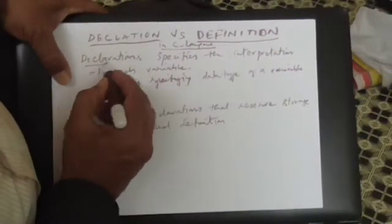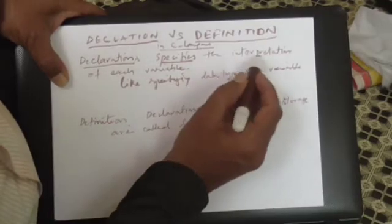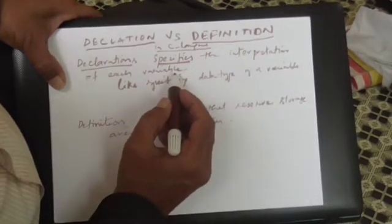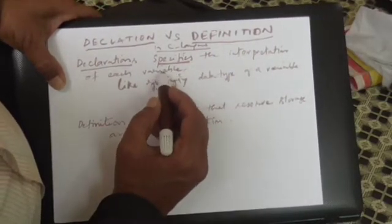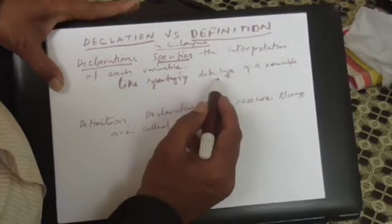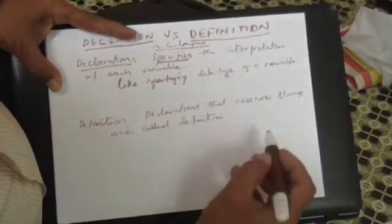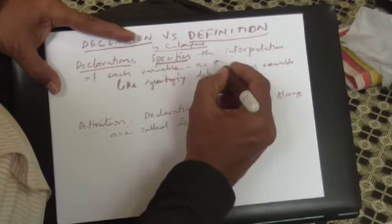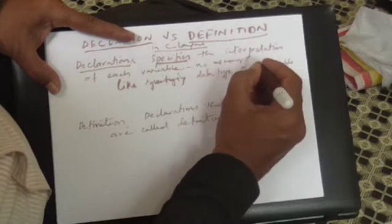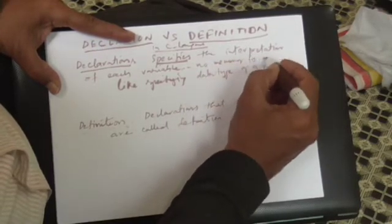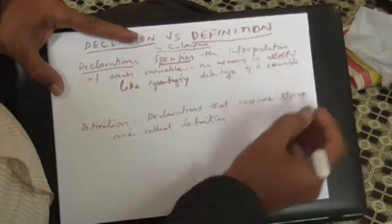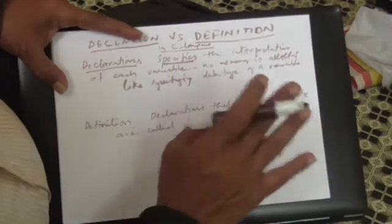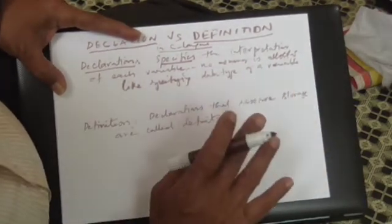The declaration specifies the interpretation of each variable. Interpretation means it is like specifying the data type of a variable, and no memory is allotted. That's what the meaning of declaration is — you are telling what it is, that's all.